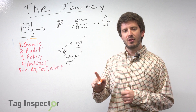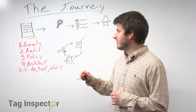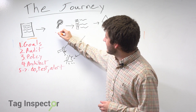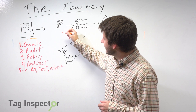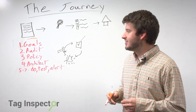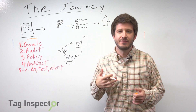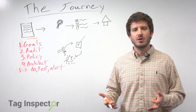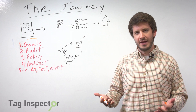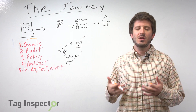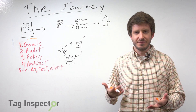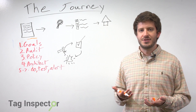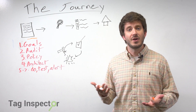The first step along the way is going to be our tag audit. For a tag audit, what we need to do is identify what tags are actually on the website, where they are, what pieces of data are being collected, and what types of interactions are actually being tracked.